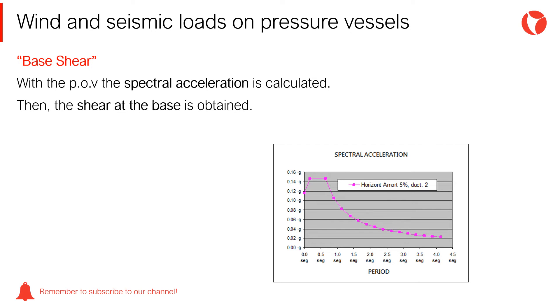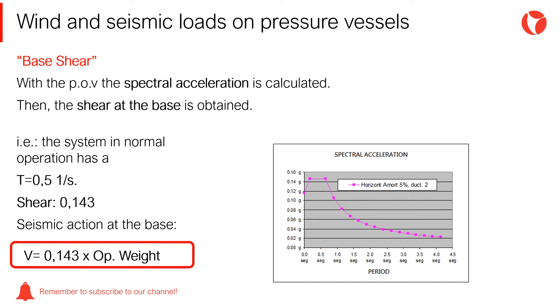Once the natural vibration period of the system has been calculated, it is necessary to use the spectral acceleration curve and obtain the shear at the base. This is the response that a pressure vessel will have in a seismic event in a specific location. For example, let's suppose that the system has a natural period of vibration of 0.5 seconds. This value is then entered in the curve and it is observed that the spectral acceleration for this equipment is 0.143 Gs. This means that the system will be subjected to a horizontal shear force at base, which will be equivalent to 0.143 times its operating weight.